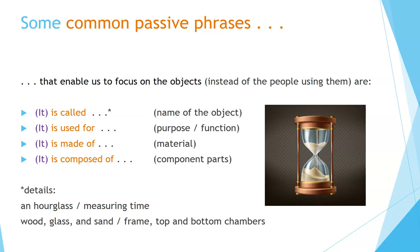Can you make sentences about this object? Here are some details. An hourglass. Measuring time. Wood, glass, and sand. Frame, top and bottom chambers. This is called an hourglass. It is used for measuring time. It is made of wood, glass, and sand. It is composed of a frame, and top and bottom chambers.